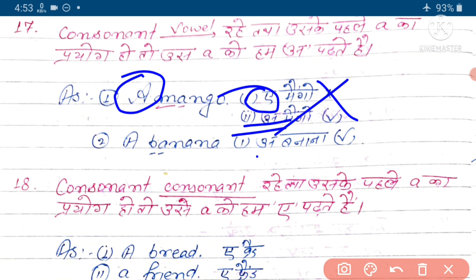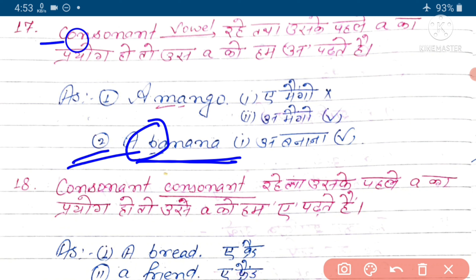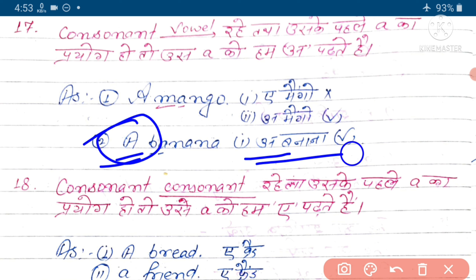'An' padhenge - 'an mango'. Next example hai 'banana'. Banana mein bhi consonant hai aur uske just baad maujud 'a' vowel hai. Isi liye hum log banana mein maujud 'a' ko 'an' padhenge - 'an banana'.